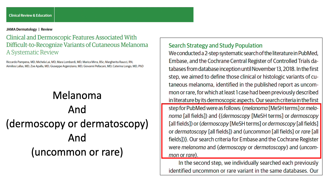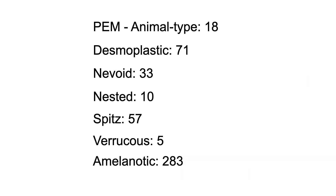In this podcast, we'll cover in particular the following variants, for which some typical clinical dermoscopic criteria were found: pigmented epithelioid melanocytoma, animal type melanoma, desmoplastic, nevoid, nested, Spitz, verrucous, and amelanotic melanoma. Reported near each name is the number of cases included in the systematic review.